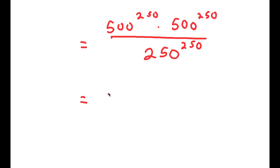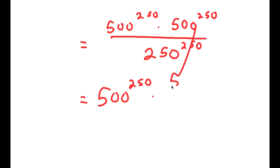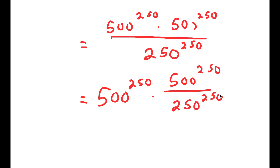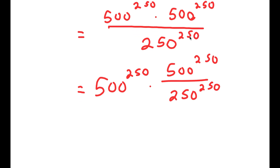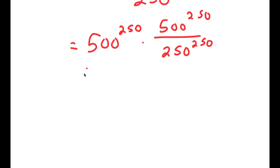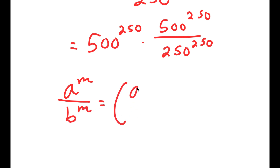Now, this is the same thing as 500 to the power of 250 times 500 to the power of 250, over 250 to the power of 250. If I have something in the form a to the power of m over b to the power of m, this is equal to a over b to the power of m.